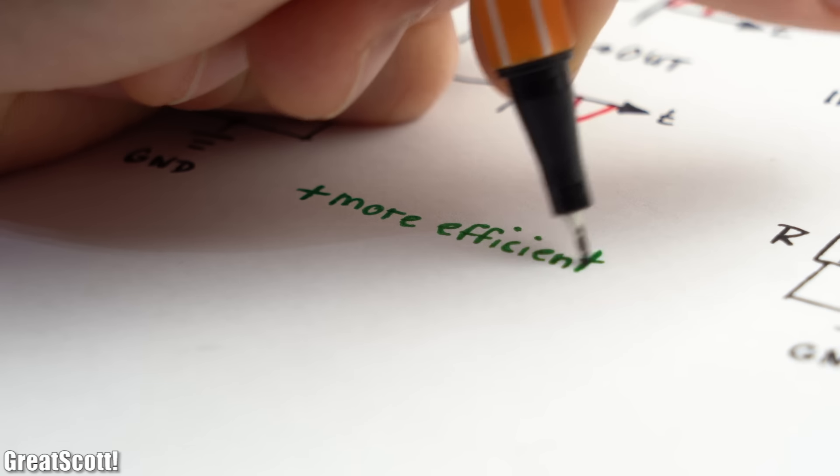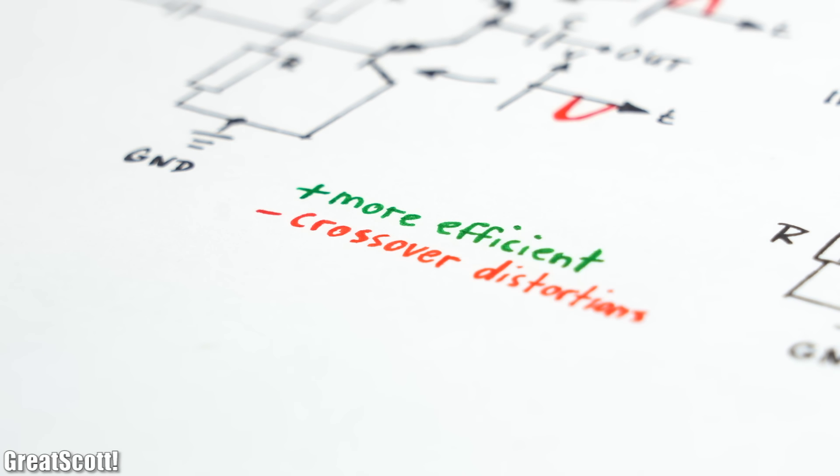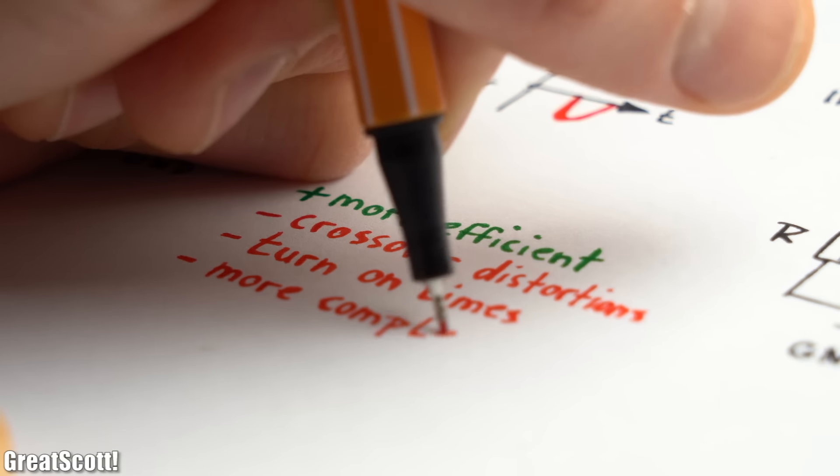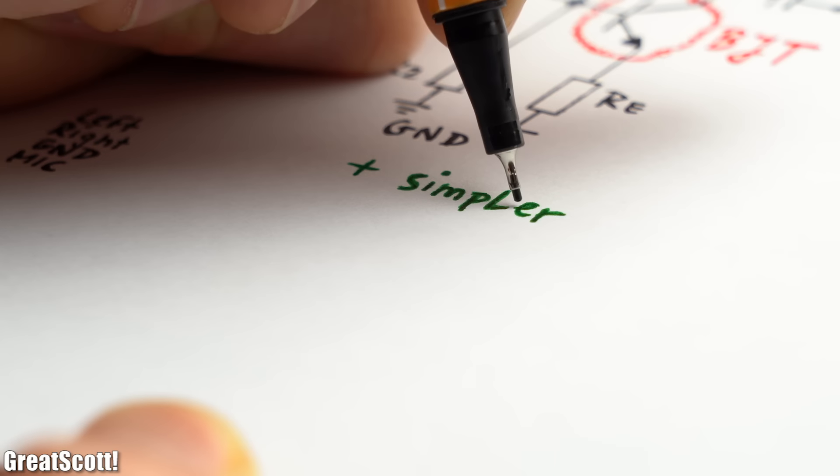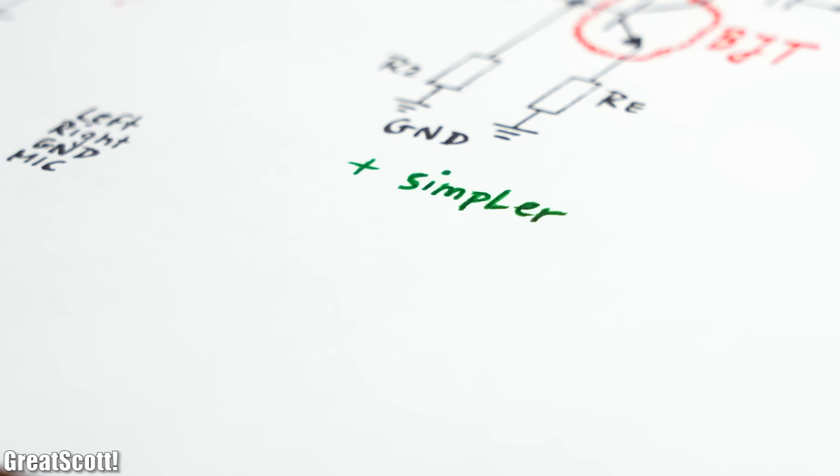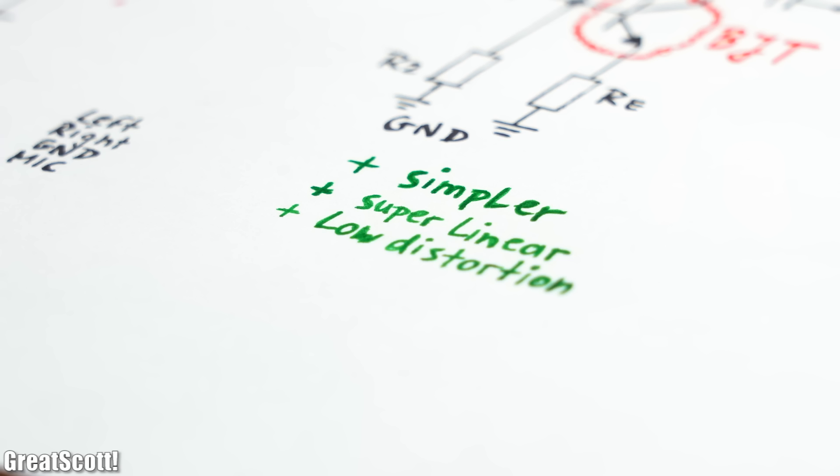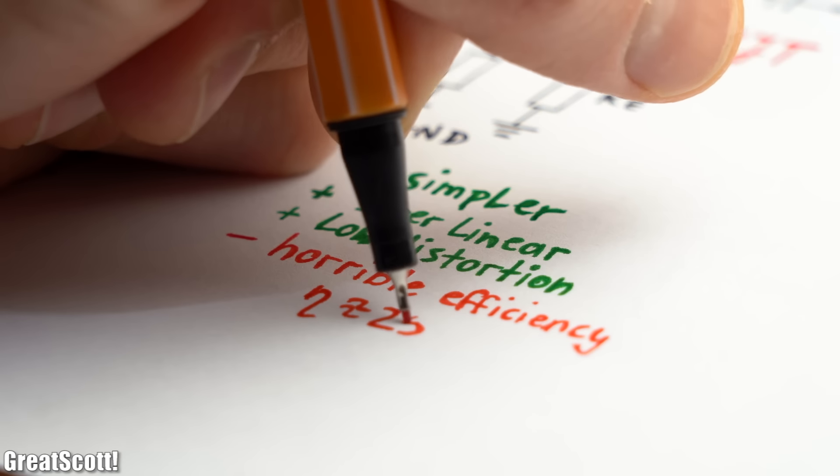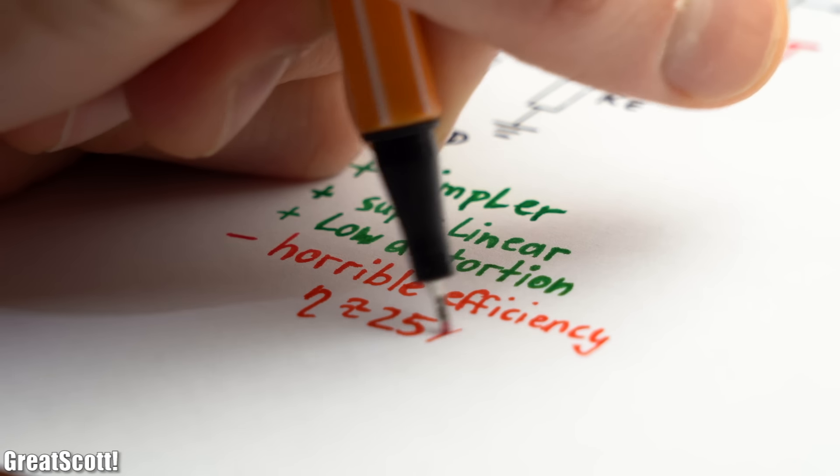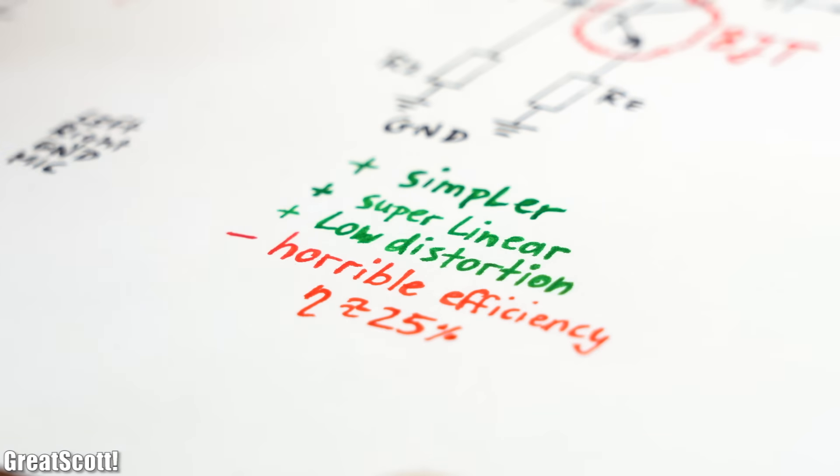That means they are more efficient, but can have problems with crossover distortions or turn-on times and are always a bit more complex to design and build. Class A amps, however, are simpler to build and feature a super linear amplification with very low distortions. But then again, their maximum efficiency is usually around 25%, which is horrible.